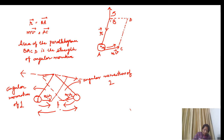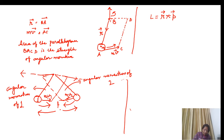We define angular momentum mathematically as L = r × p, where p is the linear momentum and r is the radial distance of the object from the reference point. Here r is a vector and p is a vector. So r is the radius vector from the reference point to the particle. This is the definition of angular momentum: L = r × p.